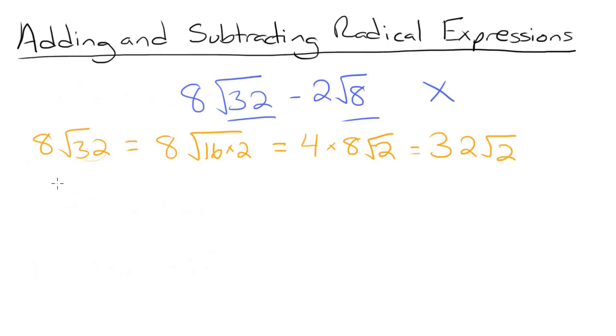Now let's take a look at 2 root 8. The square root of 8 can be rewritten as 4 times 2. So we'll have 2 times the square root of 4 times 2. 4 is a perfect square, so we can square root this and get 2. And then we'll multiply 2 times 2 root 2. 2 times 2 is 4, so this is equal to 4 root 2.